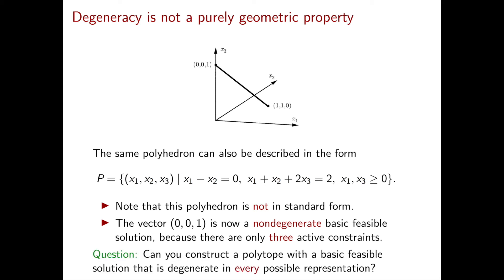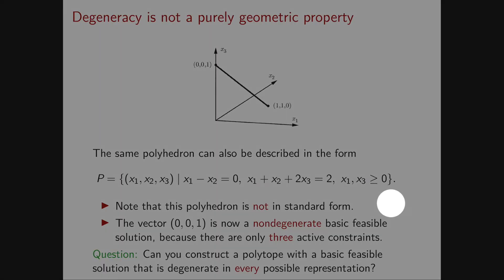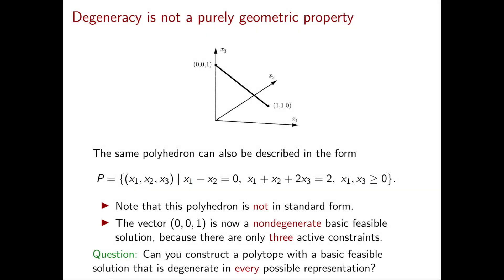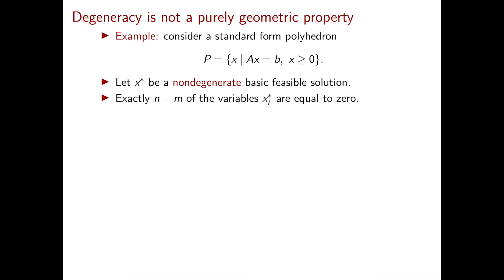A natural question is: is it always possible to get rid of degeneracy by dropping a number of inequalities? Unfortunately this is not the case. In fact, you can construct a polytope with a basic feasible solution that is degenerate in every possible representation — but you need to look at dimension 3, as you can't construct such an example in dimension 1 or 2.